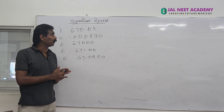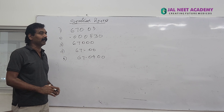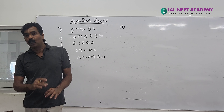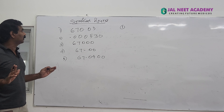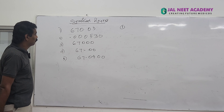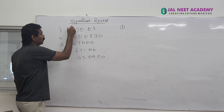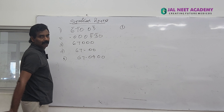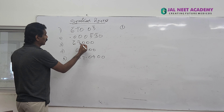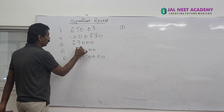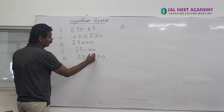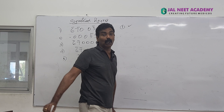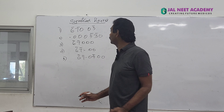First rule of significant figures: all non-zero digits are significant. First number 6, 7, 3. Second number 5, 3. Next is 6, 7, 4. Rule 1: all non-zero digits are significant.